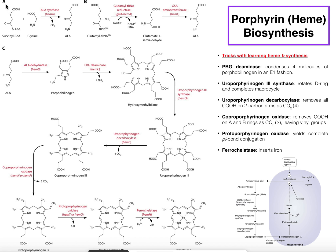There are actually two separate schemes that can be used to generate ALA. The one on the left, given as A, is the reaction done in higher-order eukaryotes, which includes mammals. In this reaction, we have an enzyme called ALA synthase, or delta-aminolevulinic acid synthase. What this enzyme does is condense succinyl-CoA from the TCA cycle with the amino acid glycine, and with the loss of carbon dioxide, in a one-step reaction, we get ALA.